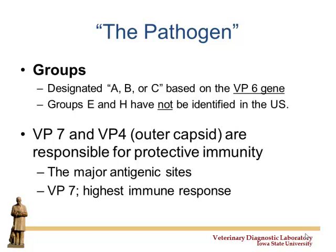A, B, and C are identified based on the VP6 gene, and E and H have not been reported here. When it comes to immunity, though, the VP7 and VP4 have the highest antigenic capacity — we really want the VP7 and VP4 antibody response to be very high. They're on the outside, so if we neutralize them prior to infection, they can't infect the cell. That's what we're trying to do — get high amounts of VP4 and VP7 antibodies produced.